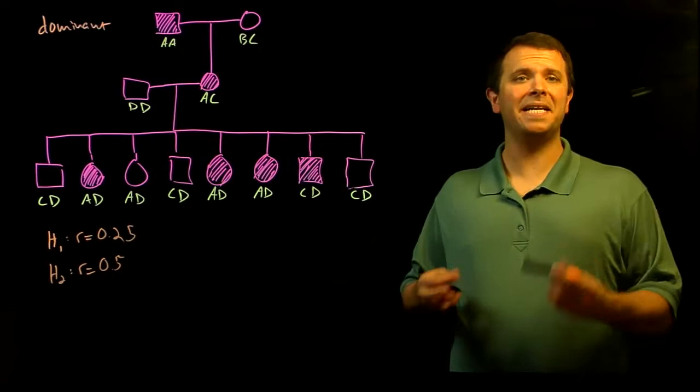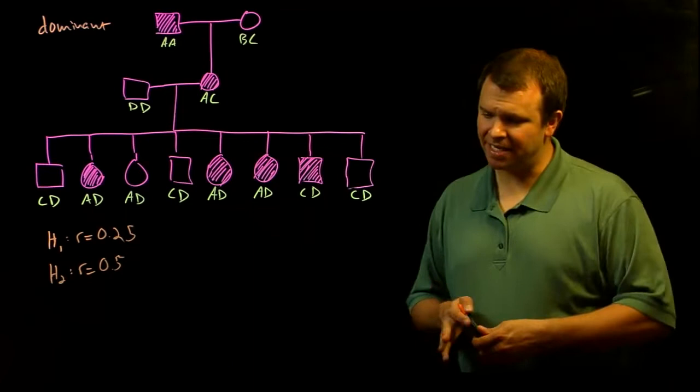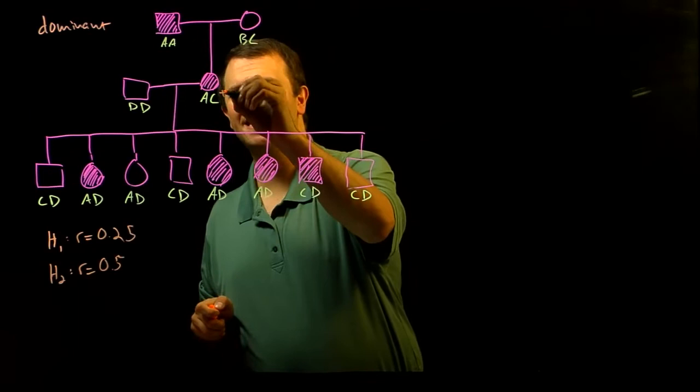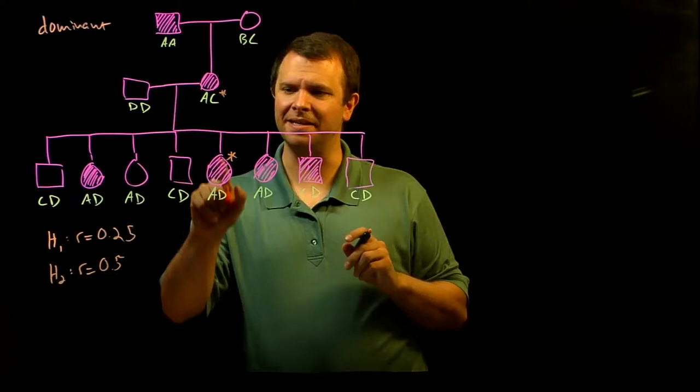where the disease gene and the A allele co-segregate. Here, this meiosis, there's an A allele that gets segregated. And then one meiosis here where the A allele and the disease gene co-segregate. One here and one here. So there are four total.